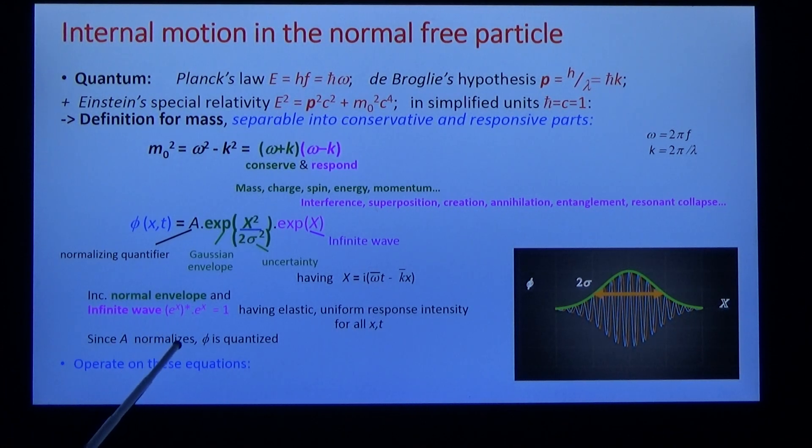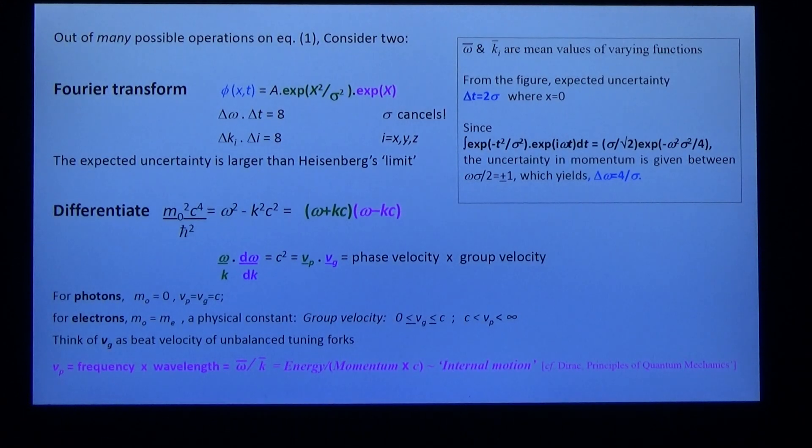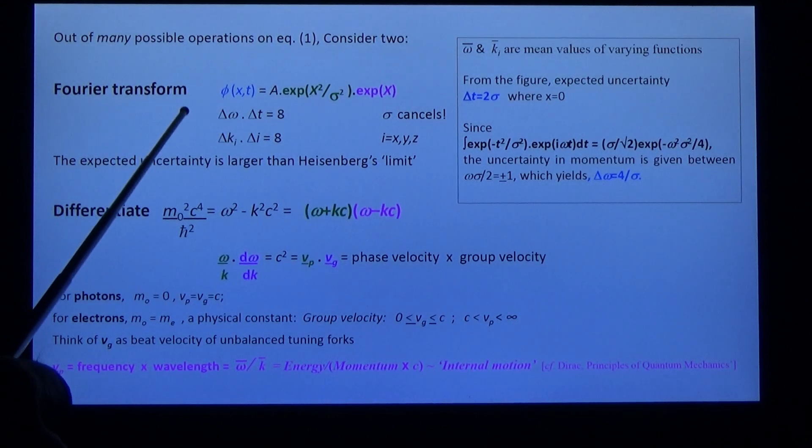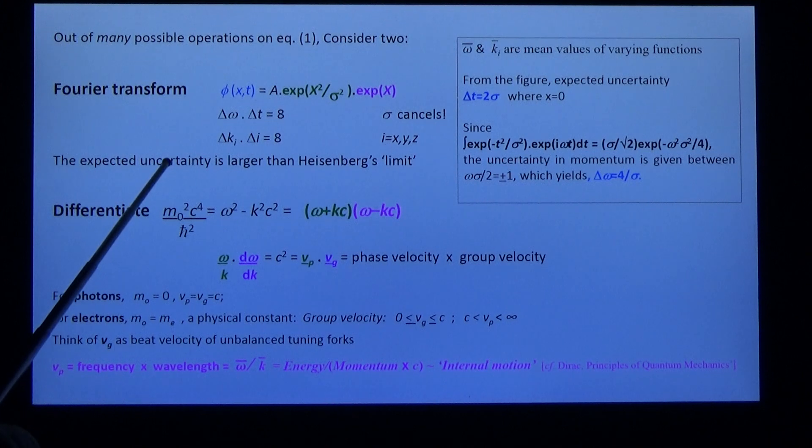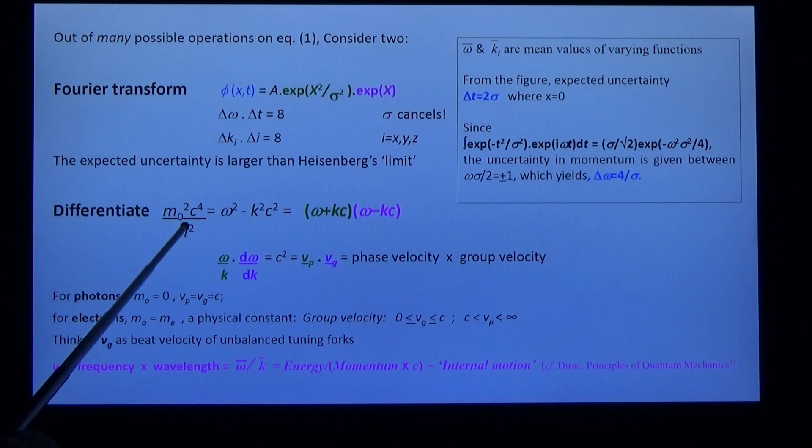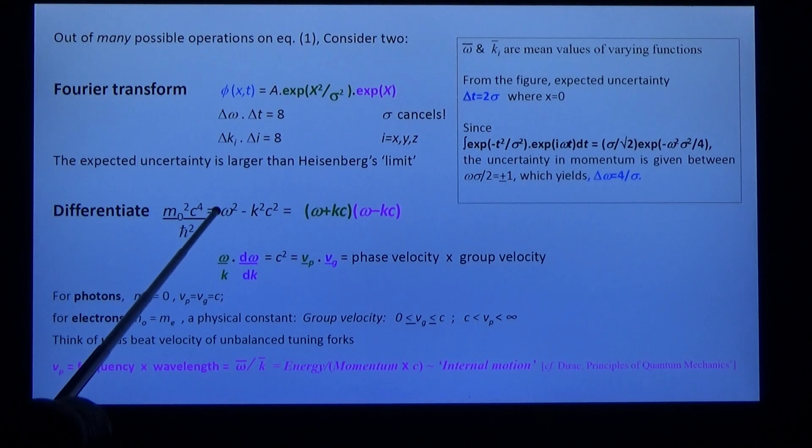We can operate on these equations in many ways. We're going to take, for today, just one, and we're going to skip the Fourier transform which describes uncertainty. When we differentiate that relativity equation, the differential is equal to 0 of these constants. When we differentiate this part of the equation, we find a very important result.